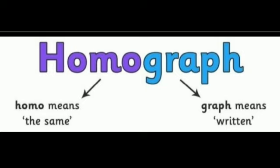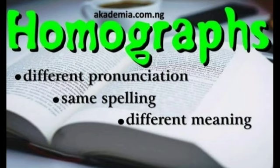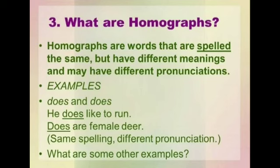What are homographs? Homographs are words that have the same spelling but different meanings. They may have different pronunciation but same spelling and different meaning. Homographs may or may not be pronounced the same way — they may be pronounced in different ways.